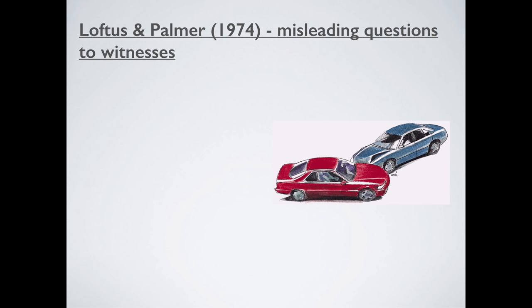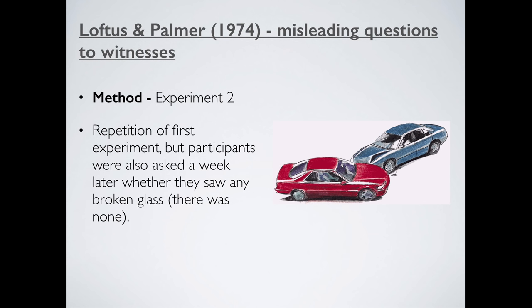Of course, being the good psychologists that they were, they kind of realized here that it could be the fact that these participants' memories have been changed, or it could just be the word that's leading them to increase the speed estimate. So how do we get around this problem? Well, they have a third group of participants. They repeat the broad scheme of things. So they watch the car crash video, they're asked the question with the different verbs. But critically here, they're also asked a week later whether they saw any broken glass.